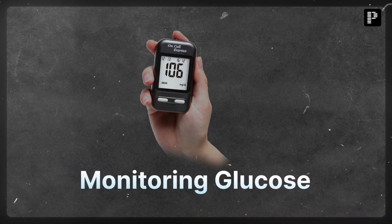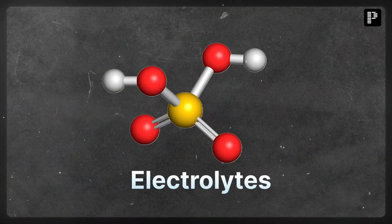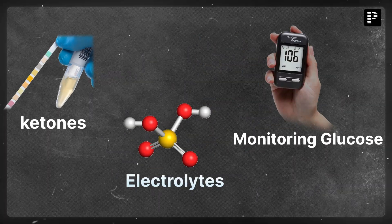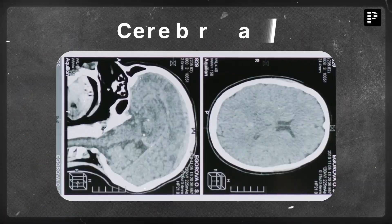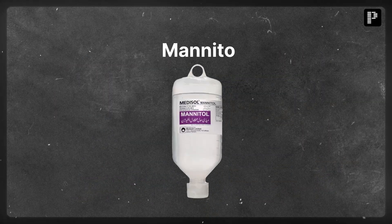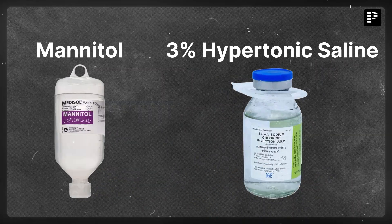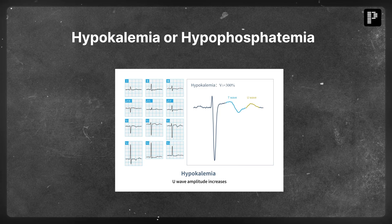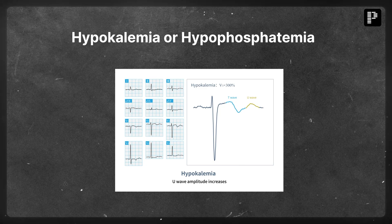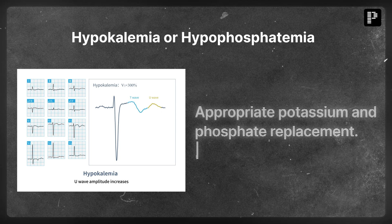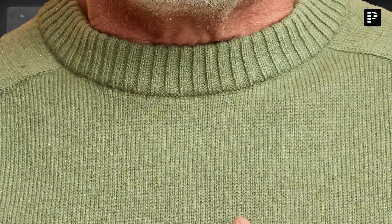Once glucose levels drop below 200 milligrams per deciliter and the patient stabilizes, transition to subcutaneous insulin such as glargine or detemir. Keep monitoring glucose, electrolytes, and ketones. Watch out for further complications: cerebral edema, which can be treated with mannitol or 3% hypertonic saline, and hypokalemia or hyperphosphatemia, which can be managed with appropriate potassium and phosphate replacement.